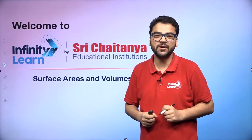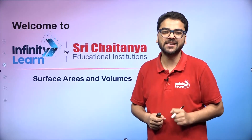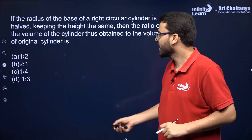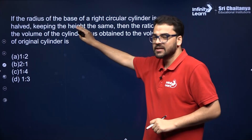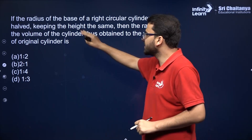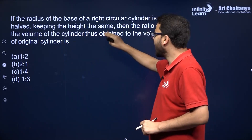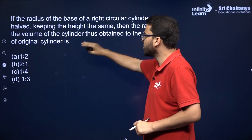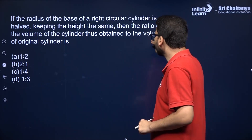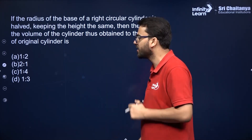Let's do some MCQs in the chapter Surface Areas and Volumes. If the radius of base of a right circular cylinder is halved, keeping the height the same, then the ratio of the volume of the cylinder thus obtained to the volume of the original cylinder is what?